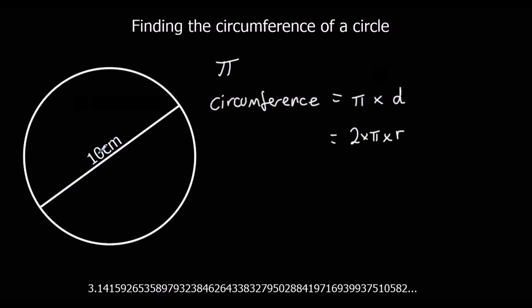In this case, we've been given the diameter, so we may as well use the top one. So we're going to do pi times 10, and then that's going to give us the length around the edge of the circle, the circumference.